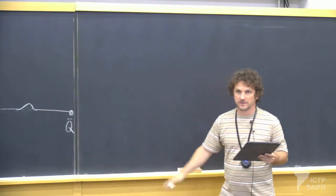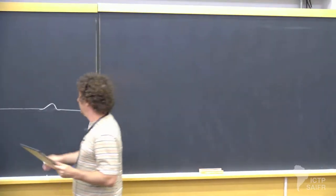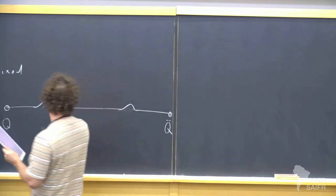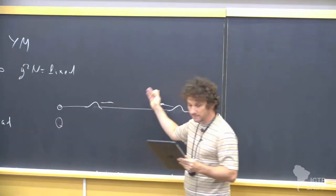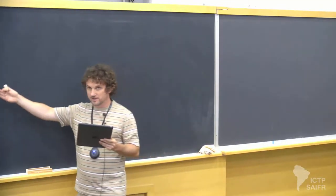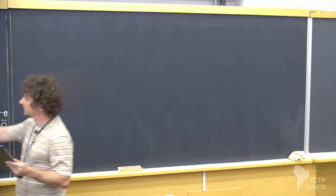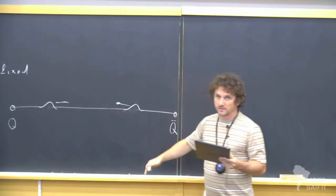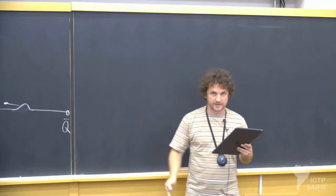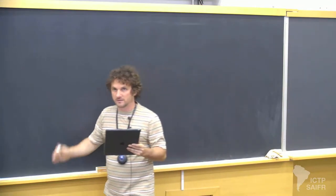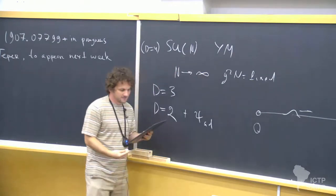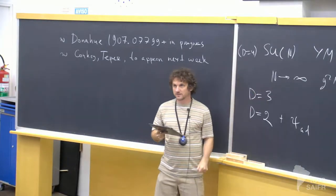If N were finite, at high enough energies — when the center-of-mass energy for collision is larger than the mass of the lightest glueball — you start producing glueballs, making this a genuinely four-dimensional theory. But if you take the large N limit first, this four-dimensional theory produces a separate sector which stays two-dimensional up until infinitely high energies. The first question in understanding SU(N) Yang-Mills in the planar limit is understanding this theory.